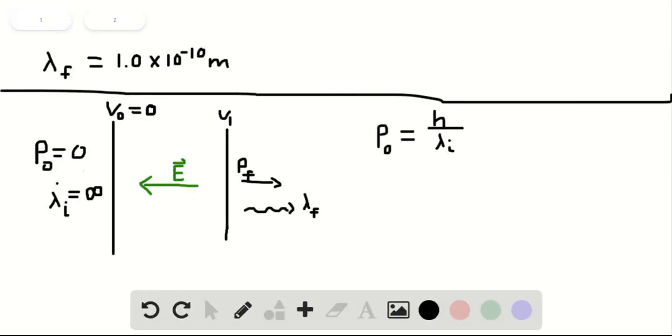For this question, we have an electron that has an infinite wavelength, and after it travels through a potential difference, it has a wavelength lambda f of 1×10^-10 m. The question asks what's the potential difference it traverses. We're going to draw a picture.